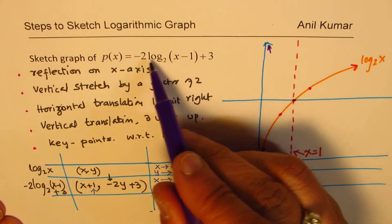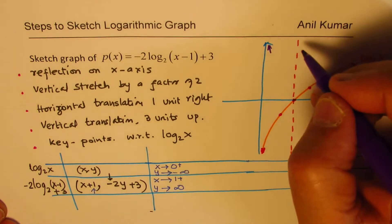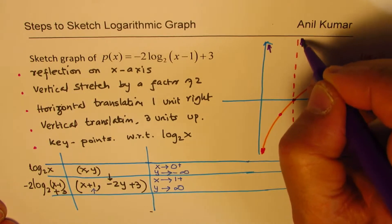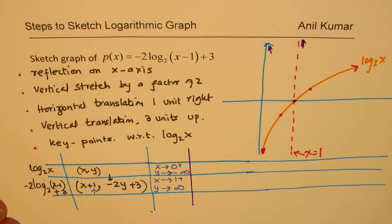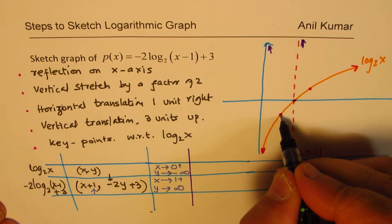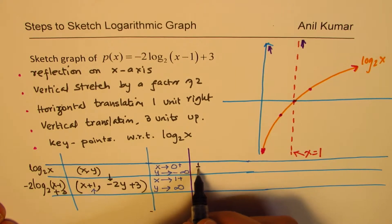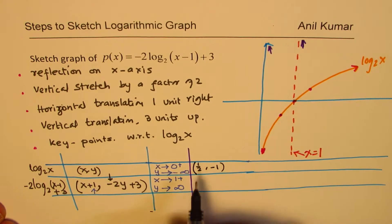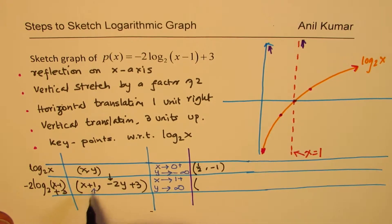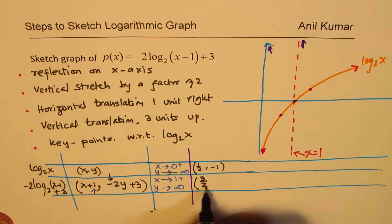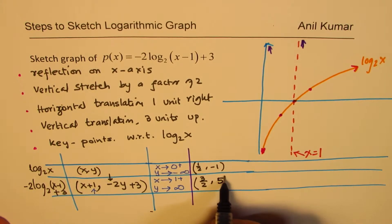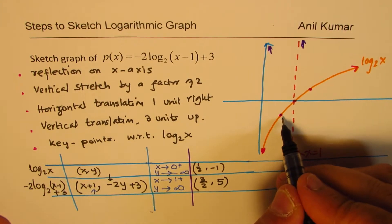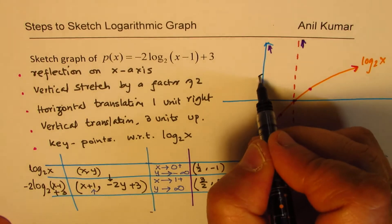Now, so combination of these two as far as the value infinity goes means that you are now approaching here. Does it make sense to you? That is the first criteria. Now let's look into the points as such. So this point here was at half, the value was minus 1. Now to half I am going to add 1 plus 1. That means 3 by 2. 3 by 2 is 1 plus half. The y value gets multiplied by minus 2. So this becomes plus 2 plus 3 makes it 5.